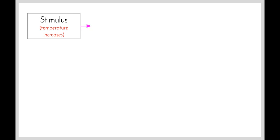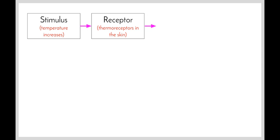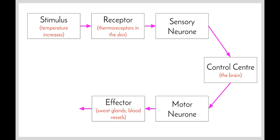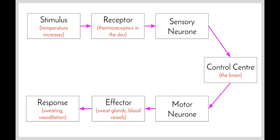Let's have a look at a flowchart that shows how this happens. We start off with a stimulus — in this example, an increase in temperature. The increase in temperature is detected by thermoreceptors in our skin, which then send a message via the sensory neuron to our control center, the brain. The control center interprets the message, works out what needs to happen, and sends a message along the motor neuron to the effector. In this case, the sweat glands and blood vessels are the effectors, and the response brought about is sweating and vasodilation. When somebody gets hot, they begin to sweat and turn red — sweating from the sweat glands releasing sweat, and going red from blood vessels dilating, which increases blood flow to the surface of the skin and helps decrease body temperature.